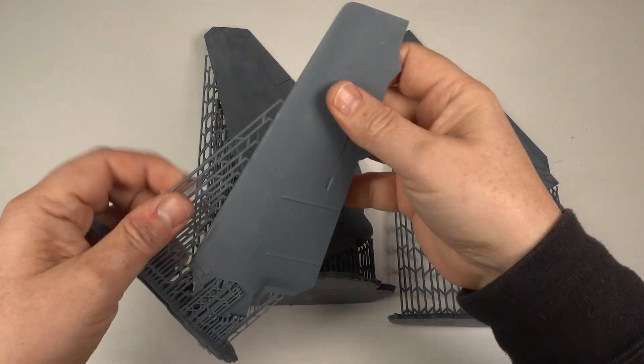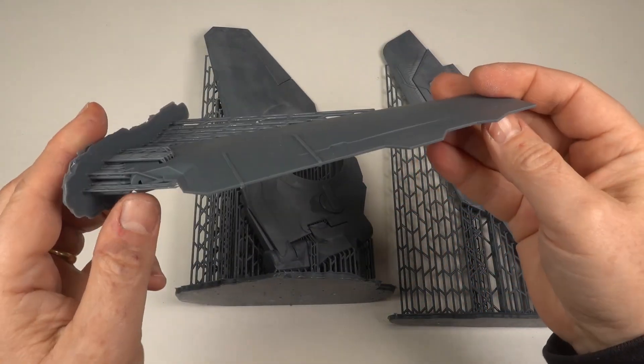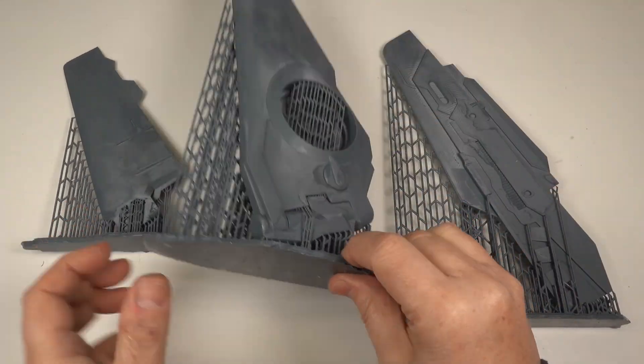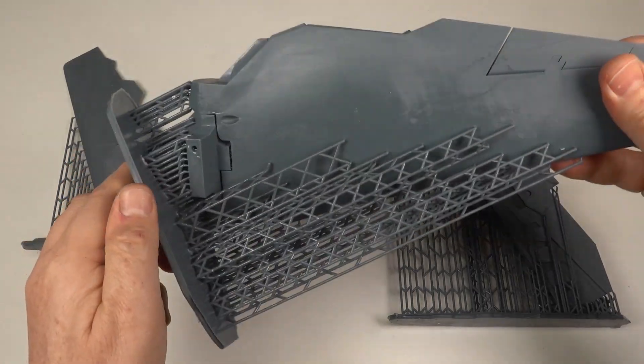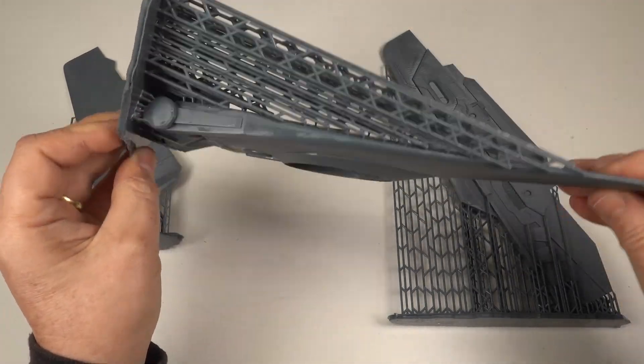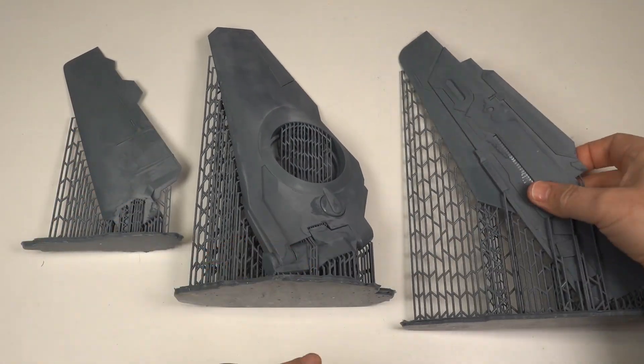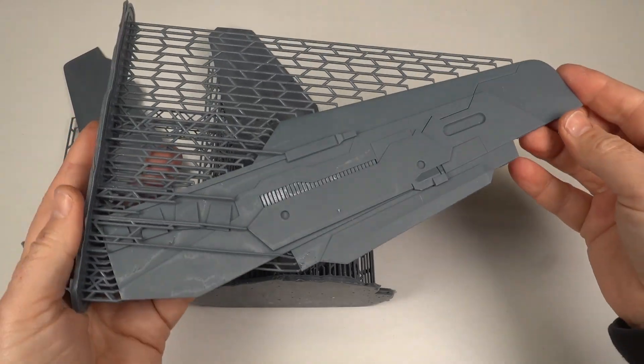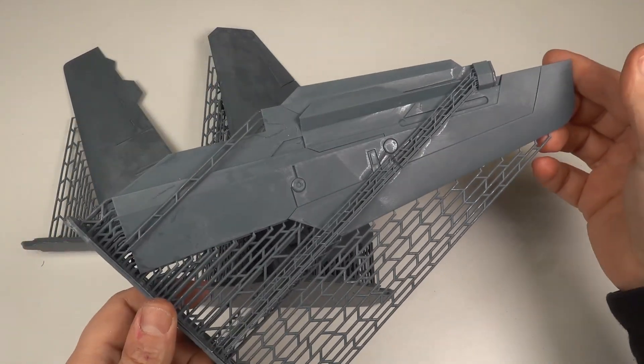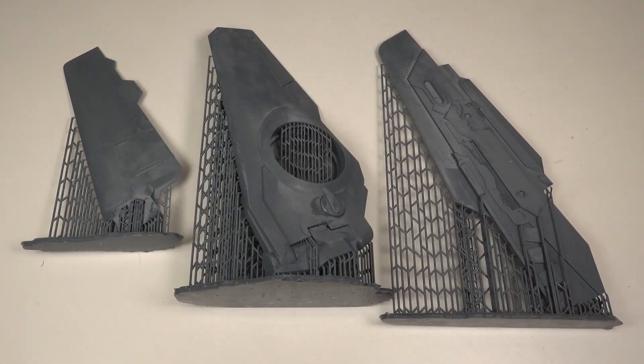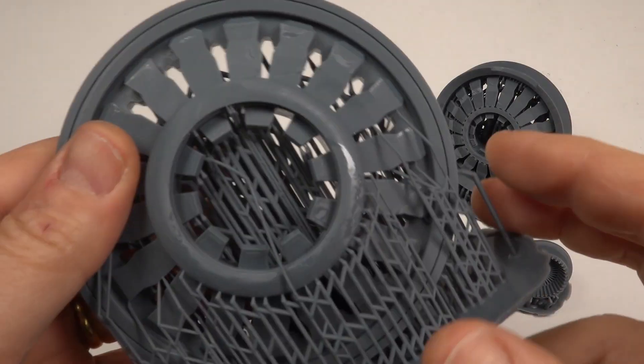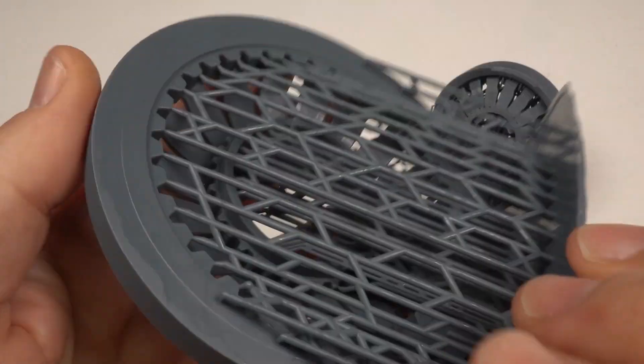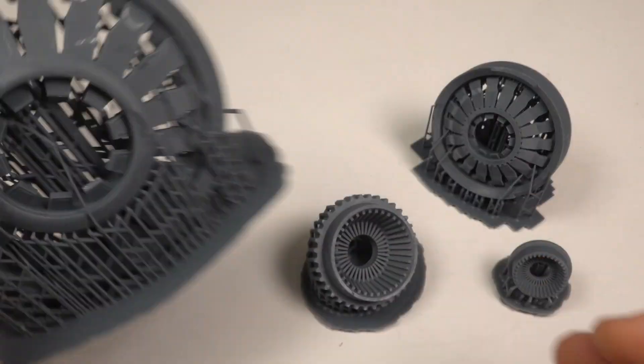The three other wings were no problem after the first one. They all came out straight and true. This resin and printer combination works really well for these massive parts. I can see no distortion either which is always a concern, especially on long straight geometric parts.